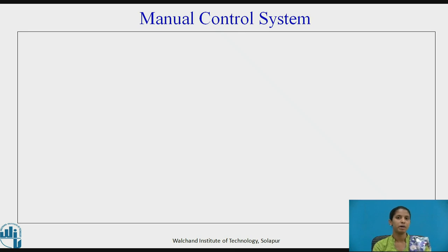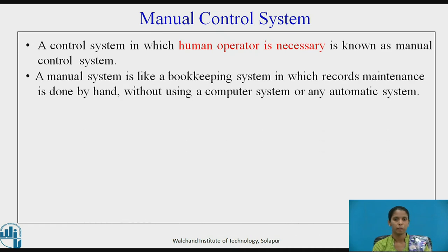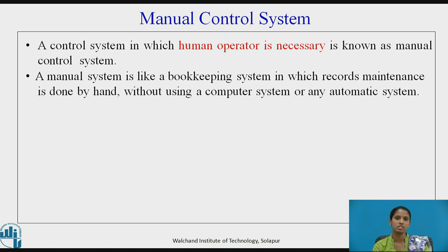Let us see what are manual control systems. The name itself indicates manual, that is man — the interference of man. A control system in which a human operator is necessary is known as a manual control system. A manual system is like a bookkeeping system in which records maintenance is done by hand without using a computer or any other automatic system.